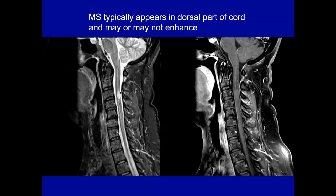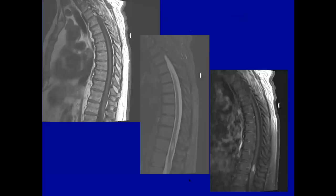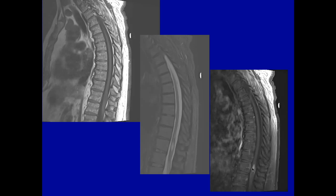Here's another lesion — also demyelinating disease. This is an older lesion in that there's not much mass effect and no convincing enhancement. It looks a little brighter probably because it's fat suppressed, giving some magnetization transfer contrast, but this is another MS lesion. They're often in the dorsal part of the spinal cord. I want to distinguish that from this case: a similar lesion in a younger patient with a little expansion of the cord and fusiform high signal intensity.